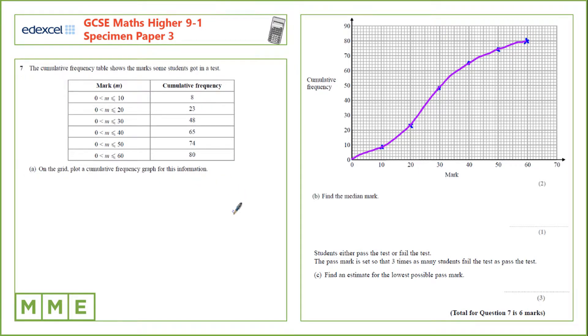For part b we need to find the median mark. In order to do this we look at the cumulative frequency and the median is halfway through the data. So we'll take the total cumulative frequency, 80, divide that by 2 to get 40.